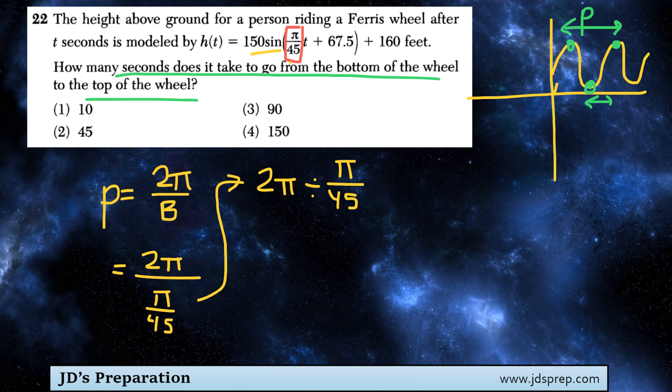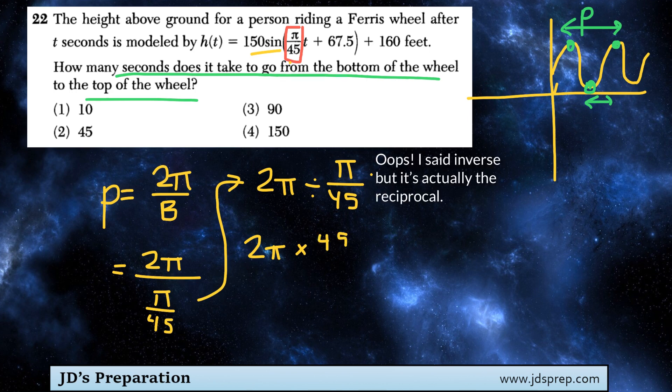I find that writing it this way is easier, because to divide fractions, you kiss and flip. So this is actually the same thing as 2π multiplied by the inverse of π/45, which would be 45/π. Hence, kiss and flip. We switched to multiplying, and we flipped the fraction.